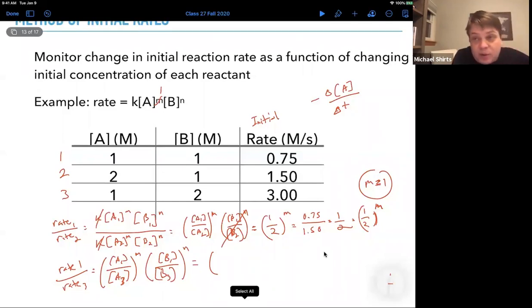And so we get that the concentration of B, concentration in experiment one, B1, that's one. Concentration experiment three is two to the n is equal to 0.75, that's the rate, initial rate in experiment one, divided by 3.00 equals one fourth. So now we have the equation one half to the n is equal to one fourth. And that's pretty easy. We can solve that by inspection and n equals two.